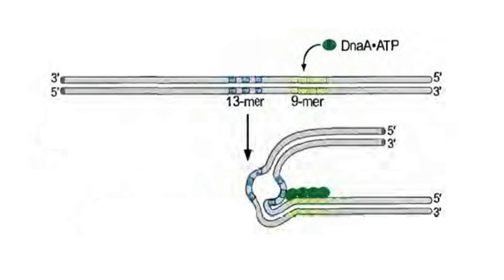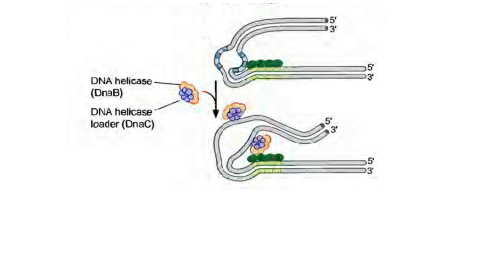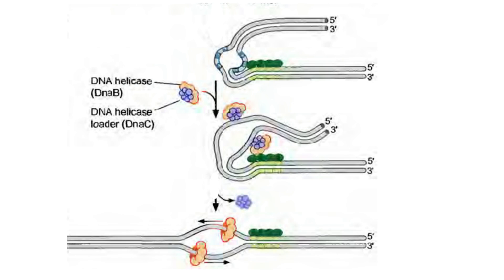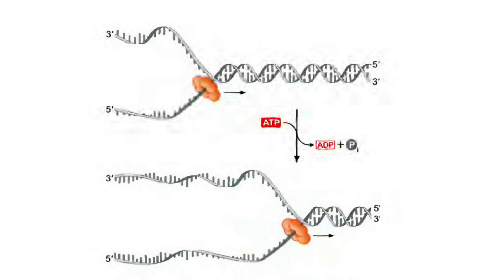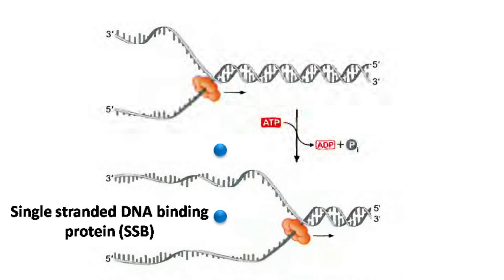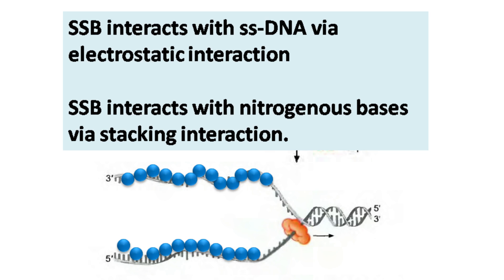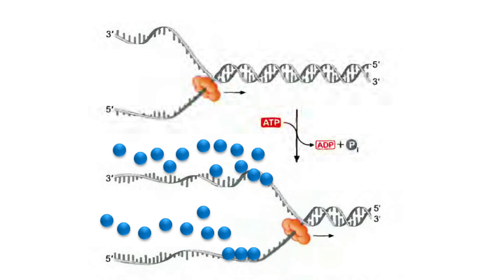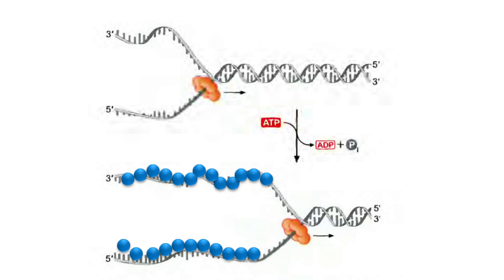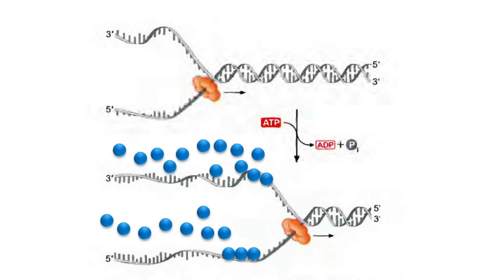In the next step, DnaB protein, also known as helicase, and DnaC protein, also known as helicase loader, are loaded to the melted DNA. The helicase loader interacts with DnaA and loads the helicase into the melted region. Using energy from ATP, the helicase starts unwinding of the DNA, and the single-stranded DNA formed is quickly occupied by SSB, also known as single-stranded DNA binding protein. SSB interacts with single-stranded DNA via electrostatic interactions and nitrogenous base stacking interactions. SSB shows cooperative binding — one molecule of SSB helps the binding of other SSB molecules.